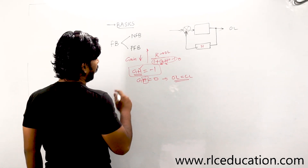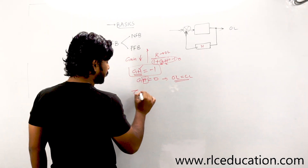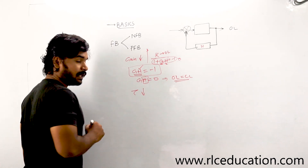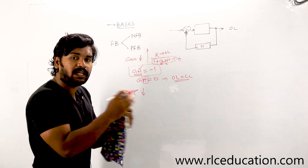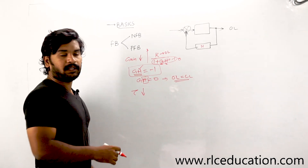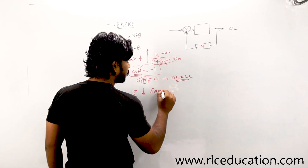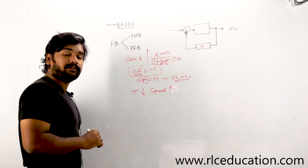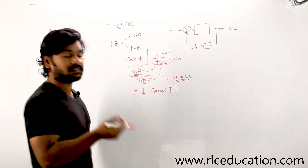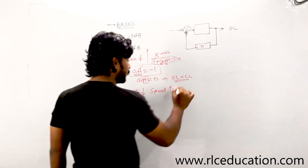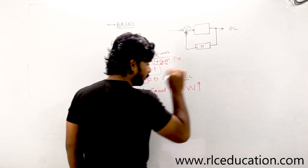Another advantage of a negative feedback system is that the system time constant will decrease. A decreasing time constant means the system takes less time to operate — the speed of the system has increased. If the speed of the system increases, the bandwidth of the system is also increased. So due to negative feedback, the bandwidth of the system will increase.